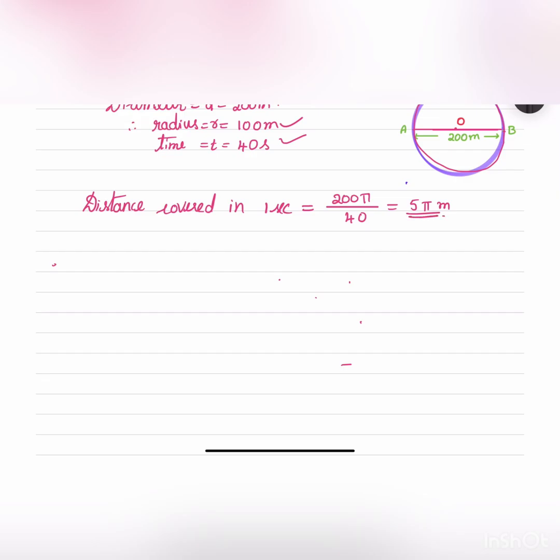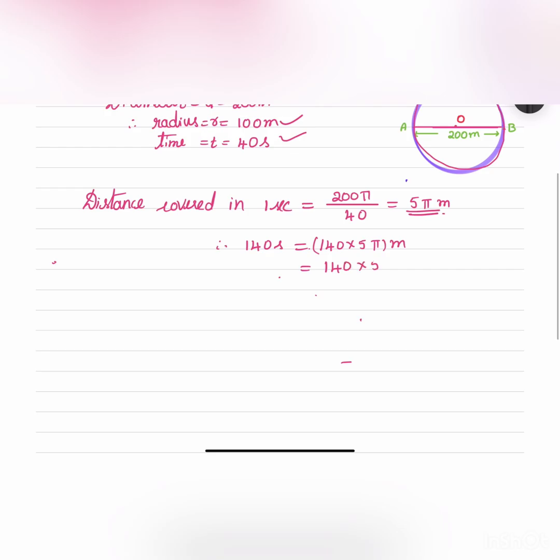Hence distance for 140 seconds, which is equal to 2 minutes 20 seconds, so that is 140 seconds, it will be 140 into 5π meters. 140 into 5 into π is 22 by 7.